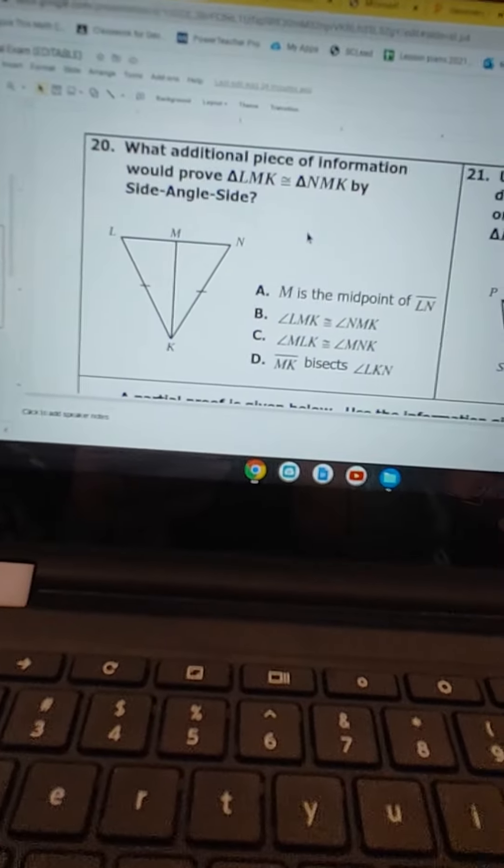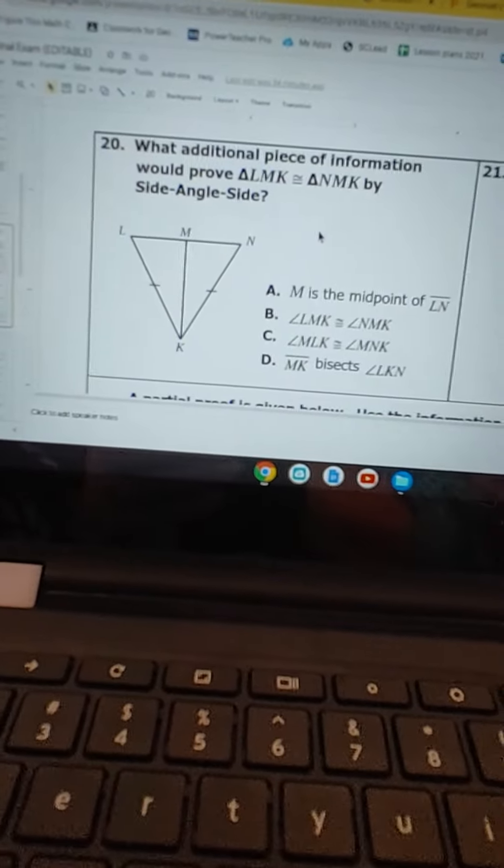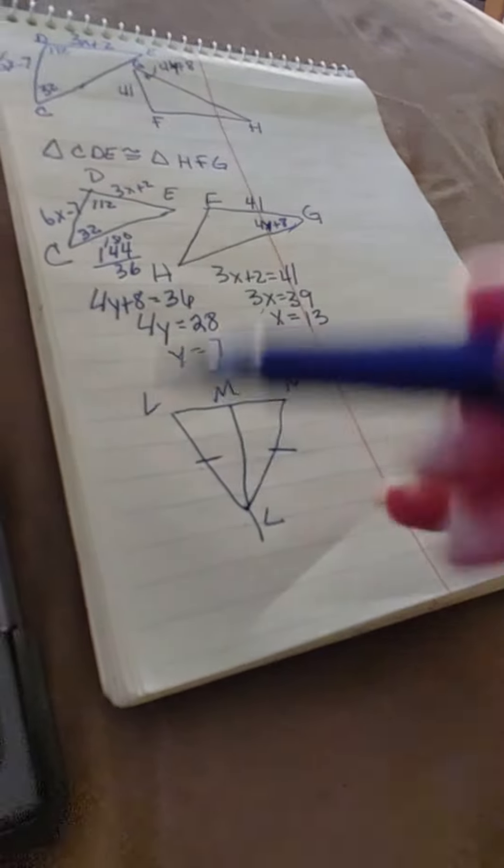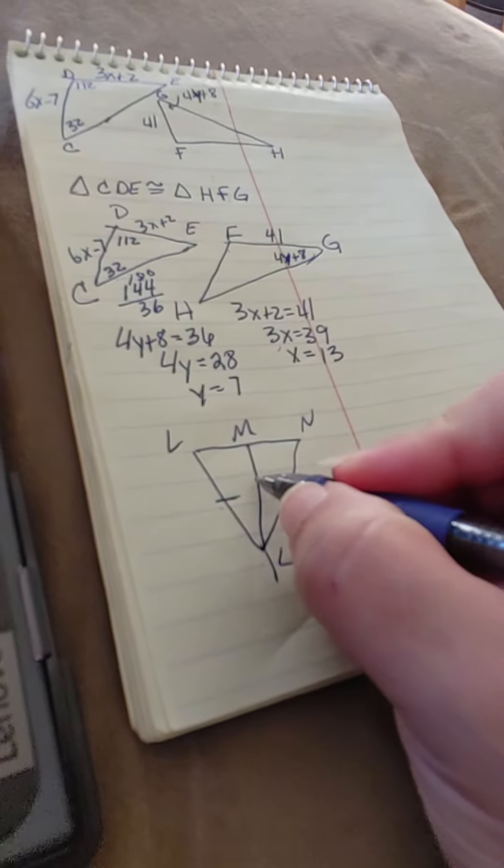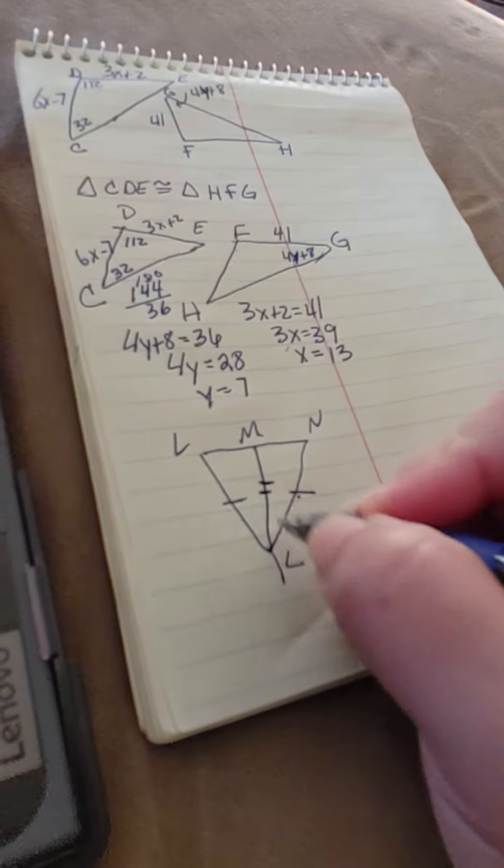So we need to have a side, an angle, and a side. Well, if we look at this, it tells us these two sides are congruent. We know that M is congruent to itself.